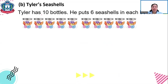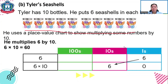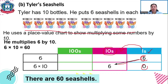Tyler has 10 bottles and puts 6 seashells in each bottle. He uses a place value chart to show multiplying numbers by 10. He multiplies 6 by 10 — when we multiply 6 by 10, the 6 moves one place to the left, from ones to tens, so it becomes 60. We put zero as a placeholder, so 6 times 10 equals 60.